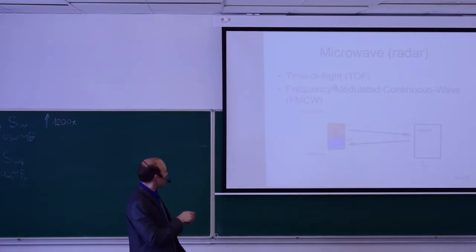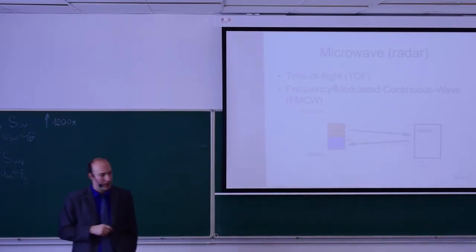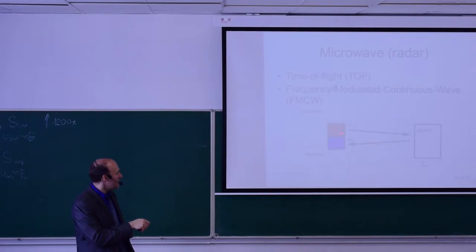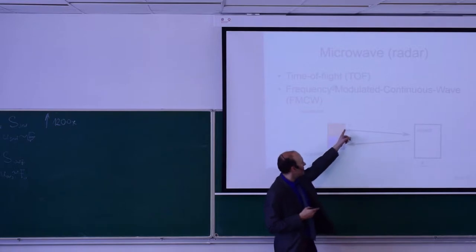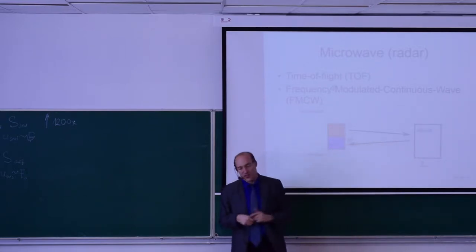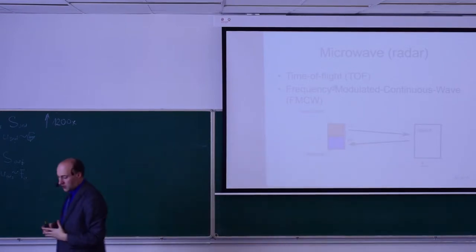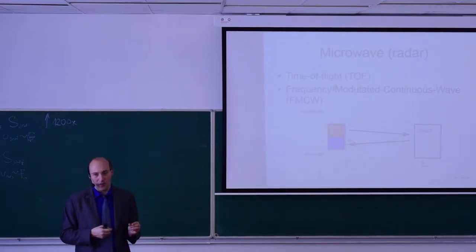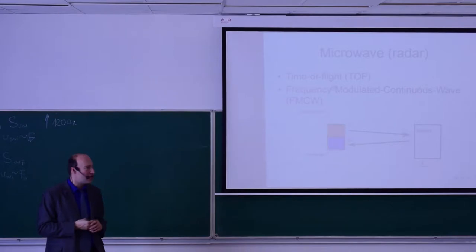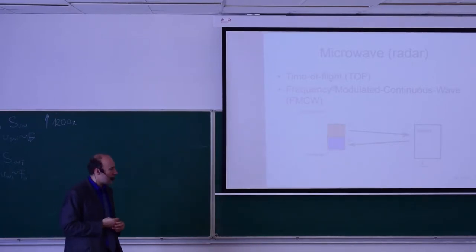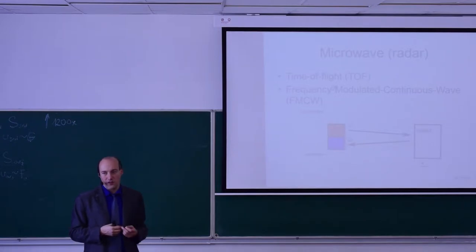The time of flight method works on a simple principle. You send a radio pulse at time T0, the signal gets reflected from the object, and you look for the time difference between when you sent the pulse and when you received it. The radio signal travels at the speed of light, so the time difference will be very small. For this reason, the time of flight method is suitable for longer distances — larger than a few hundred meters — because otherwise the time difference will be very small and difficult to measure.